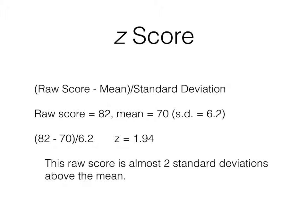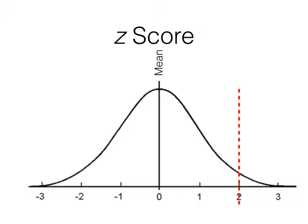So say I've got a raw score of 82 and the mean of all the scores in that set is 70 with a standard deviation of 6.2. That means that this raw score becomes a z-score of 1.94 and that's almost two standard deviations above the mean. On a normal distribution, that is pretty impressive because you can see that few score out that high from the mean.